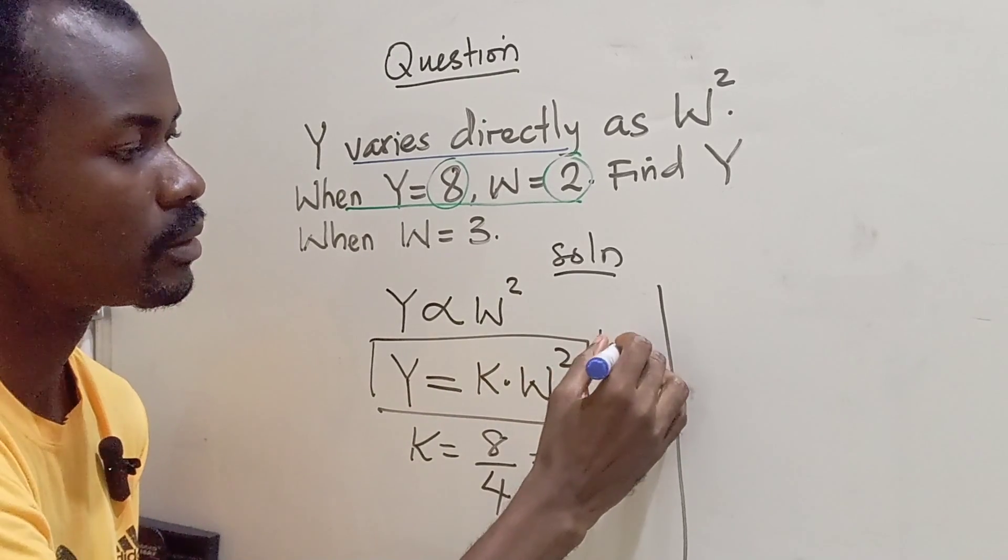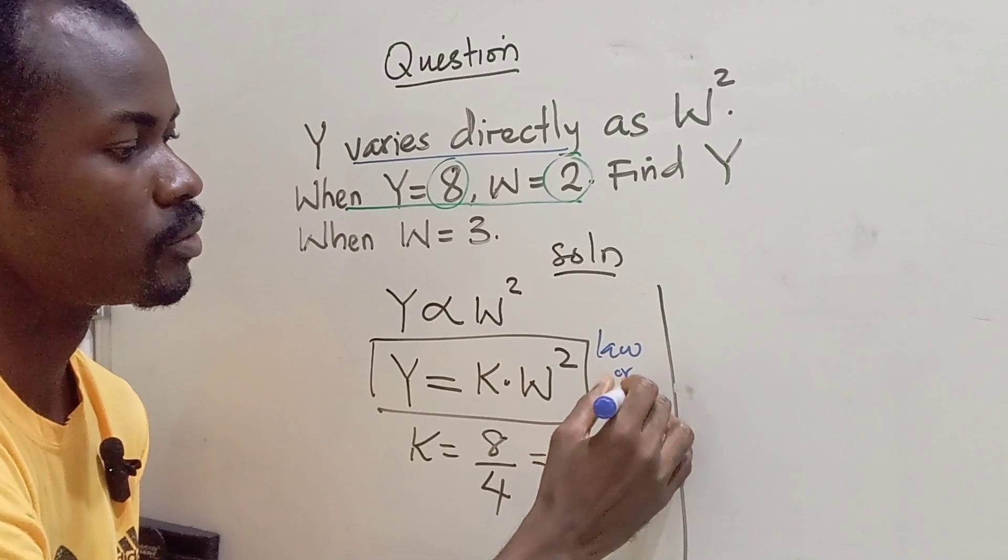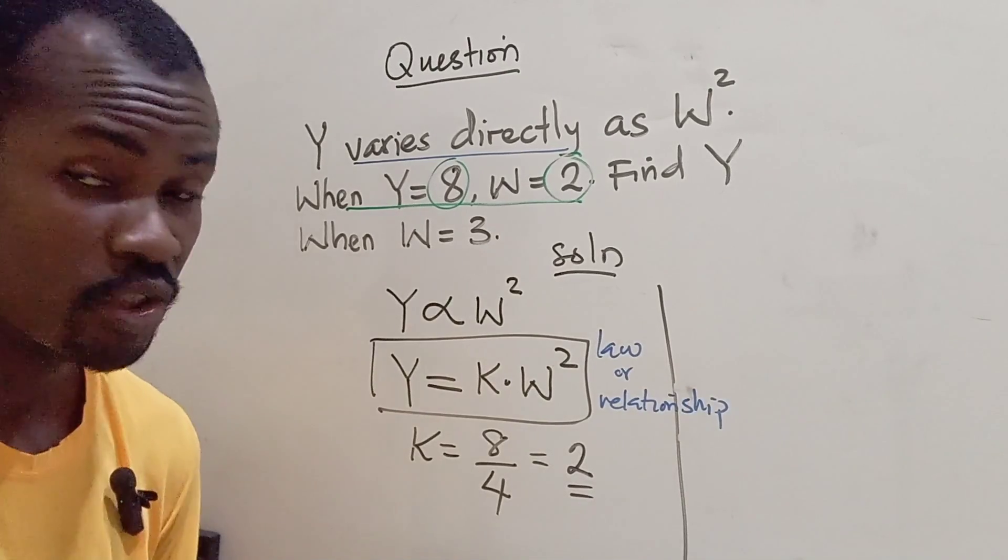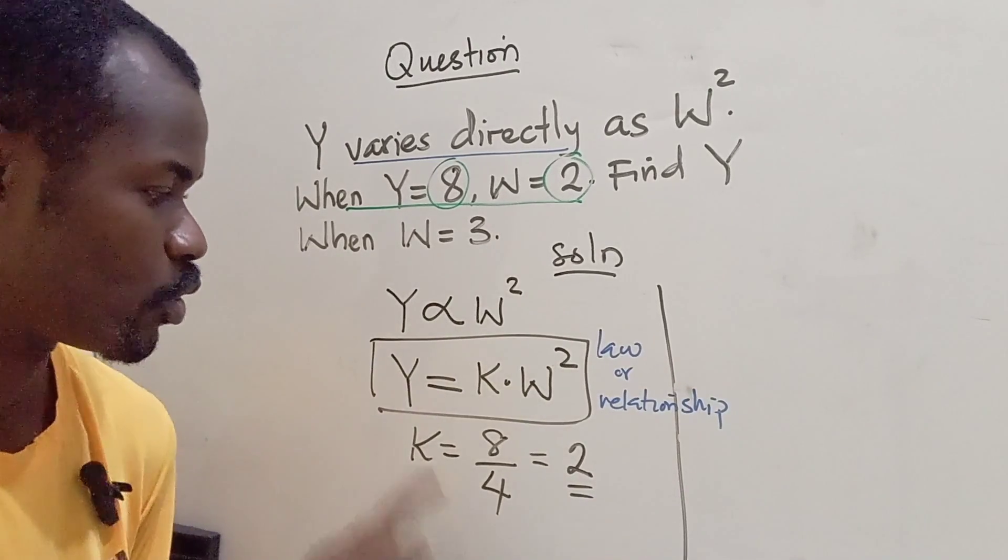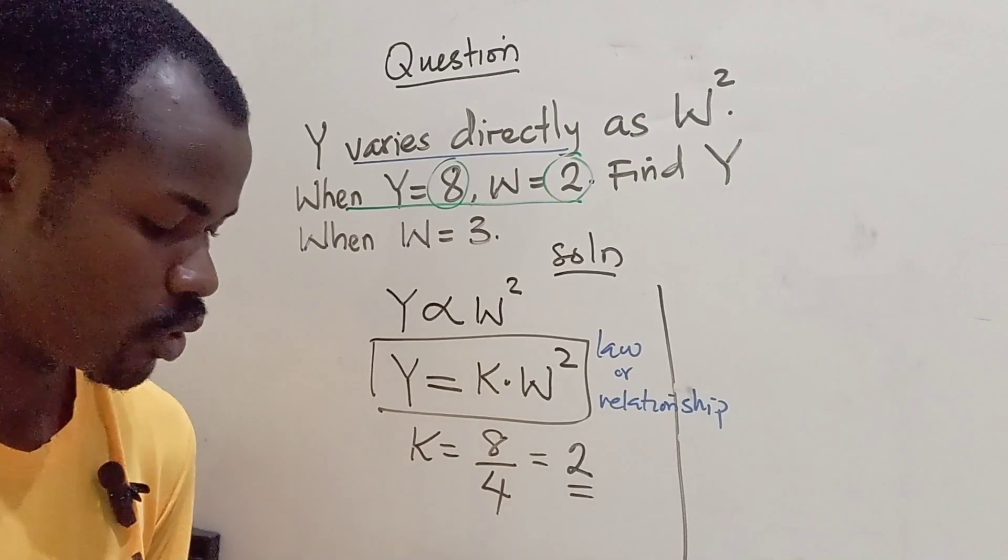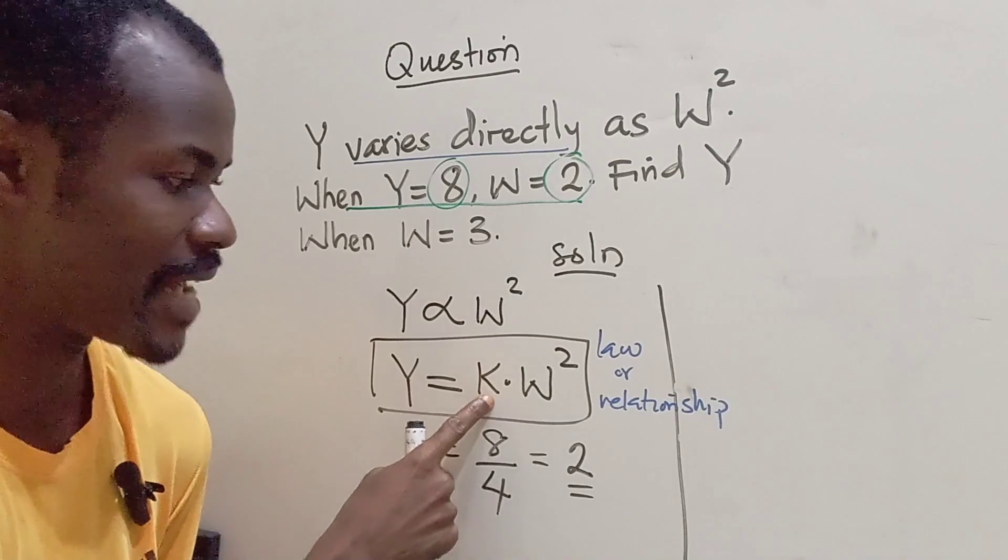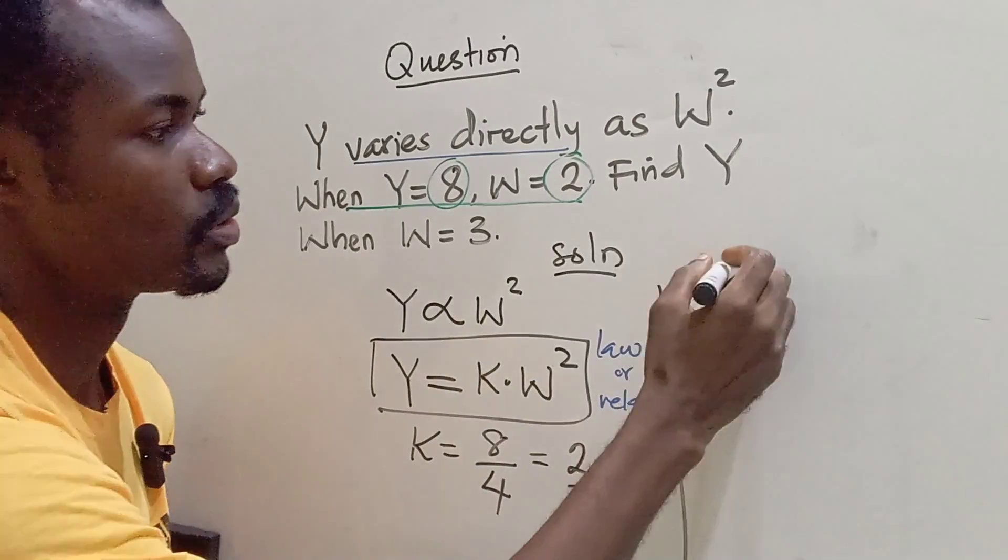So this we call the law or relationship, which is the equation connecting Y and W. So all we need to do is we are going to substitute K back into this expression.